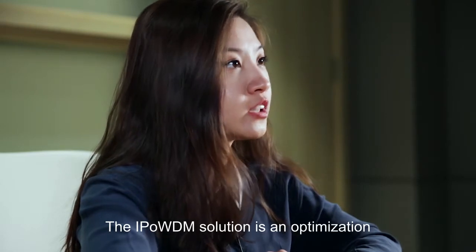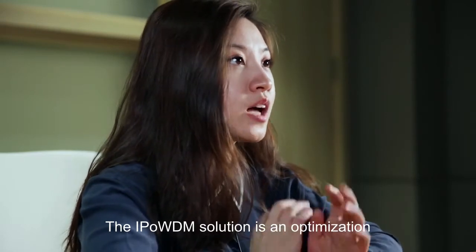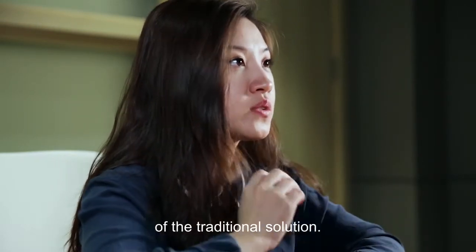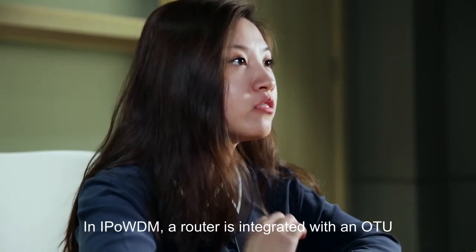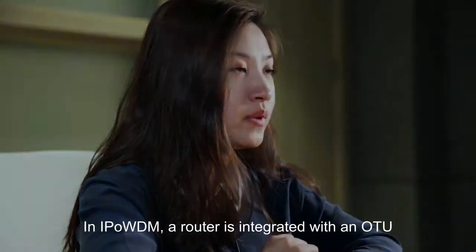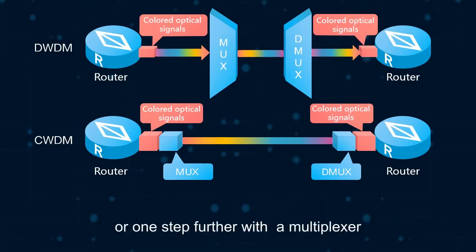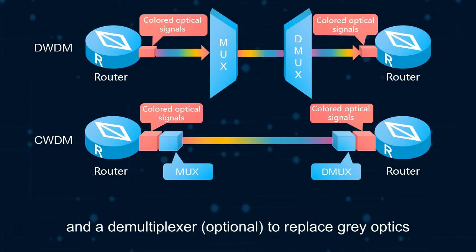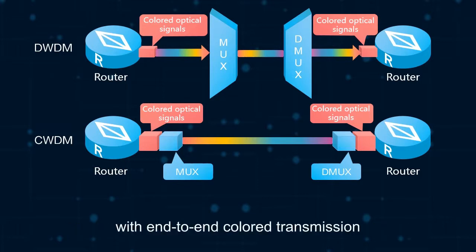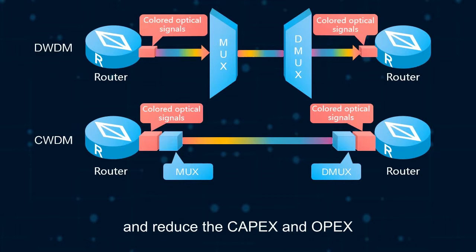The IP over WDM solution is an optimization of the traditional solution. In IP over WDM, a router is integrated with an OTU, or one step further with a multiplexer and a demultiplexer, to replace gray optics with end-to-end color transmission and reduce the CAPEX and OPEX of enterprises and carriers.